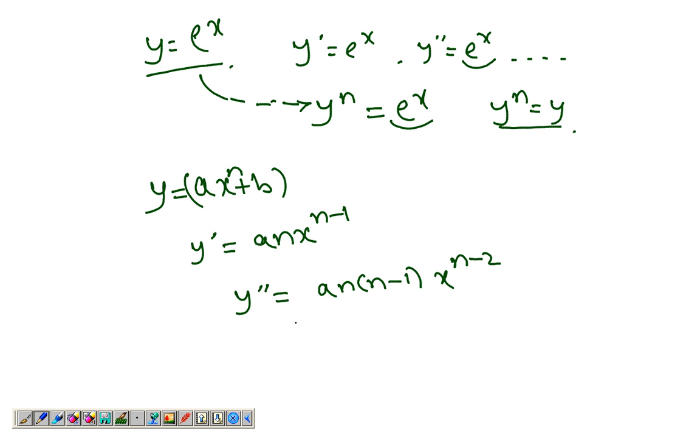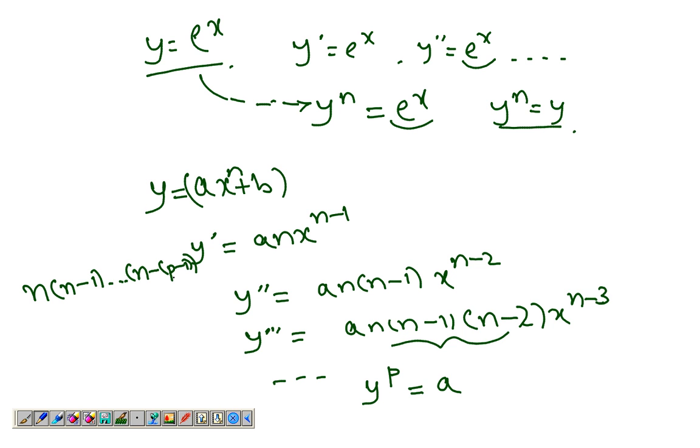y triple dash would be an(n-1)(n-2)x^(n-3), and so on. So I can say that y^p would be simply a. Now this is basically going on from n, n-1, to n minus p-1.